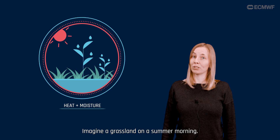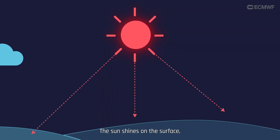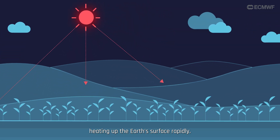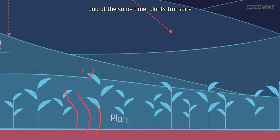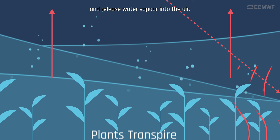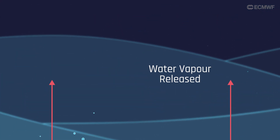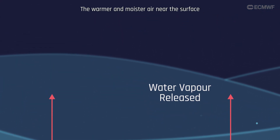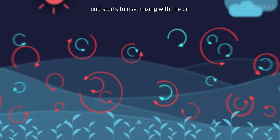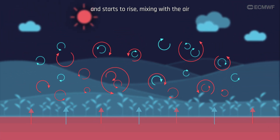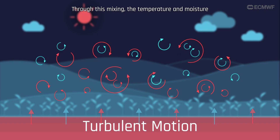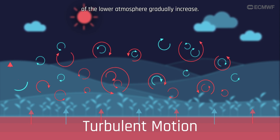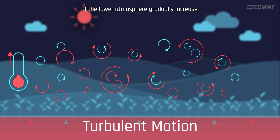Imagine a grassland on a summer morning. The sun shines on the surface, heating up the Earth's surface rapidly. The air in contact with the surface heats up, and at the same time, plants transpire and release water vapor into the air. The warmer and moister air near the surface becomes lighter than the air above it and starts to rise, mixing with the air above it in a turbulent motion. Through this mixing, the temperature and moisture of the lower atmosphere gradually increase.